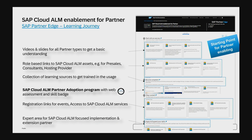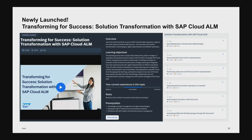The learning journey is split into levels and different areas — whether you're interested in AMS, operations, or implementation. One part includes the so-called Cloud ALM partner adoption: a quick test with some questions to show basic knowledge, and you receive a skill badge at the end. All mentioned trainings and partner benefits catalog services are well-structured in these tiles, so this is my recommended starting point.